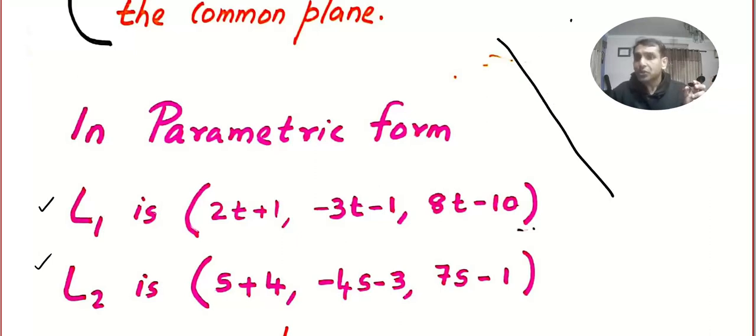When we have two intersecting lines, there will be a common point. In line 1, I wrote the parametric form with the variable t. That means when I plug in different values for t - t equal to 1, t equal to 0, t equal to 5 - I will get different points on the first line. Similarly, when I keep different values for s, I will get different points on the second line.